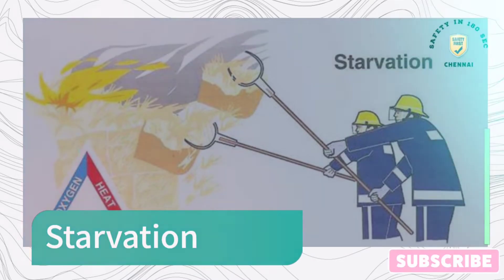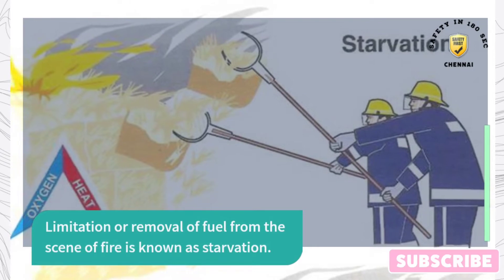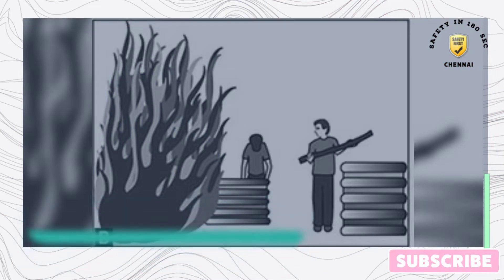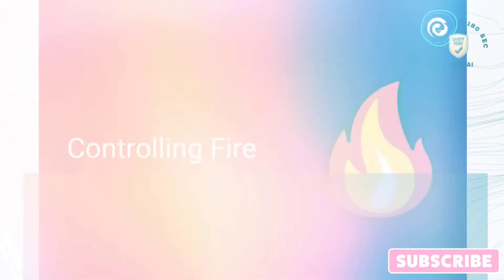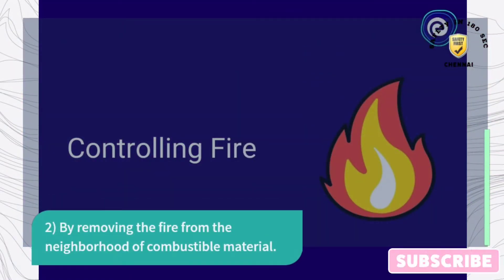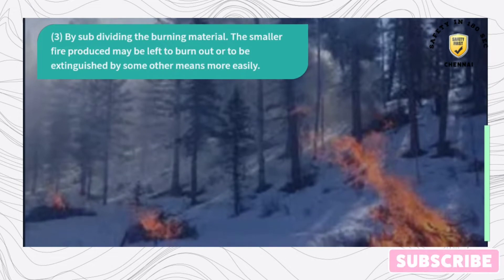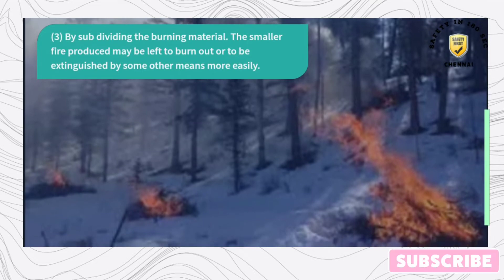Starvation. Limitation or removal of fuel from the scene of fire is known as starvation. The extinction of fire by starvation is applied in three ways: 1. By removing the combustible materials from the neighborhood of the fire. 2. By removing the fire from the neighborhood of combustible material. 3. By subdividing the burning material. The smaller fire produced may be left to burn out or extinguished by some other means more easily.